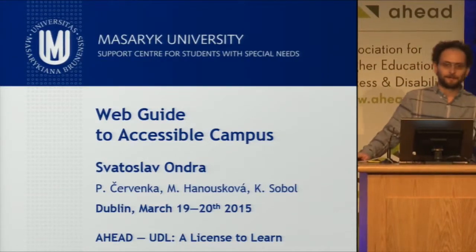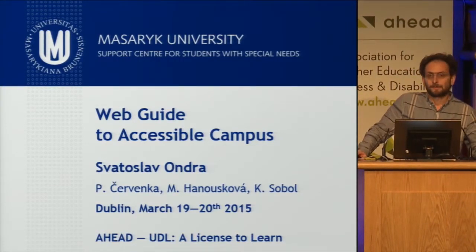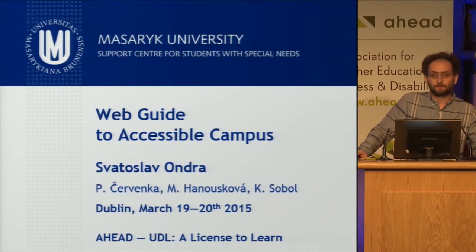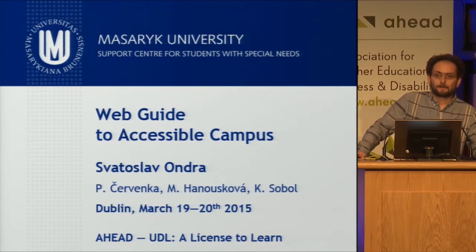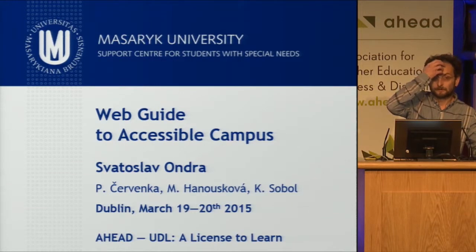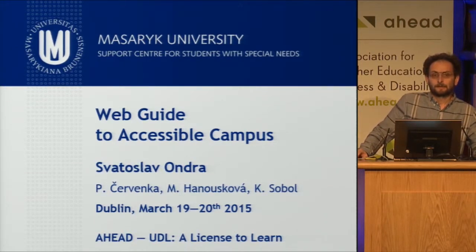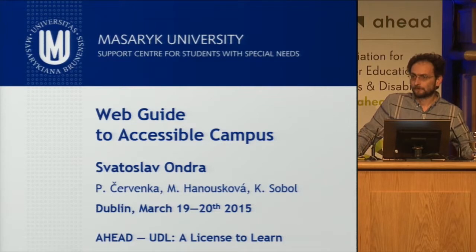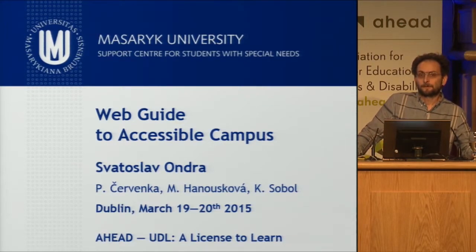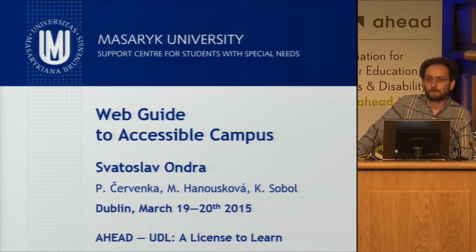Good afternoon ladies and gentlemen. My name is Svatoslav Ondra and I'm coming from Masaryk University, which is the second largest university in the Czech Republic. We have approximately 40,000 students and we run one of the biggest support centres in our country. The topic I would like to present today is about how to assure the accessibility of campus in terms of architectural accessibility, mainly for motor disabled people or those with mobility difficulties.